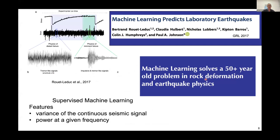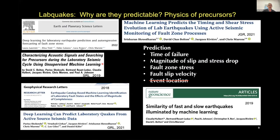But what you never could do was predict when the event was going to happen, even in the lab. That didn't happen until this paper in 2017, where Bertrand, Claudia, and people in Paul Johnson's group at Los Alamos realized that by looking carefully and using machine learning techniques on the continuous seismic data from lab experiments, you could predict when the events were going to happen. This was from data produced in my laboratory at Penn State. I've since been building a laboratory and working with people here in Rome, while still running my lab at Penn State.